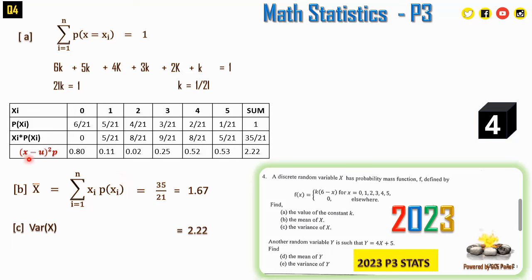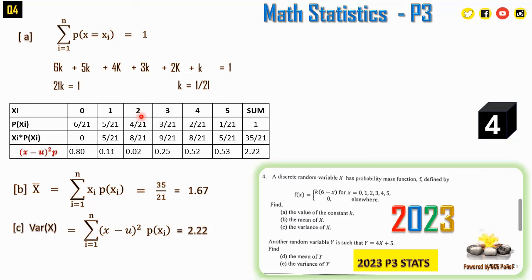For the variance, Var(X) = Σ(x − μ)²·P(x). Computing each term: (0−1.67)²×(6/21) + (1−1.67)²×(5/21) + (2−1.67)²×(4/21) + ... Summing all terms gives Var(X) ≈ 2.22.